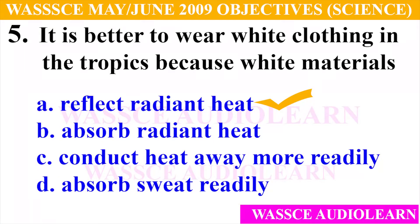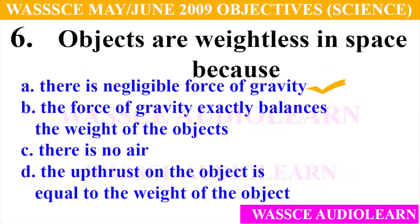Question 5: It is better to wear white clothing in the tropics because white materials — A. Reflect radiant heat, B. Absorb radiant heat, C. Conduct heat, D. Absorb sweat readily. And the answer for number 5 is A, reflect radiant heat. It is better to wear white clothing in the tropics because white materials reflect radiant heat.